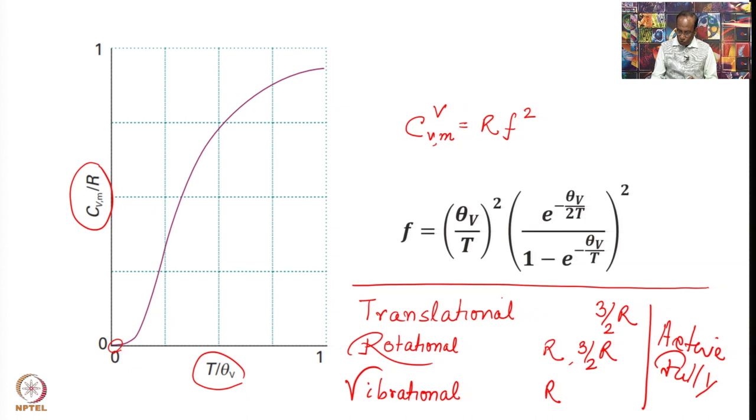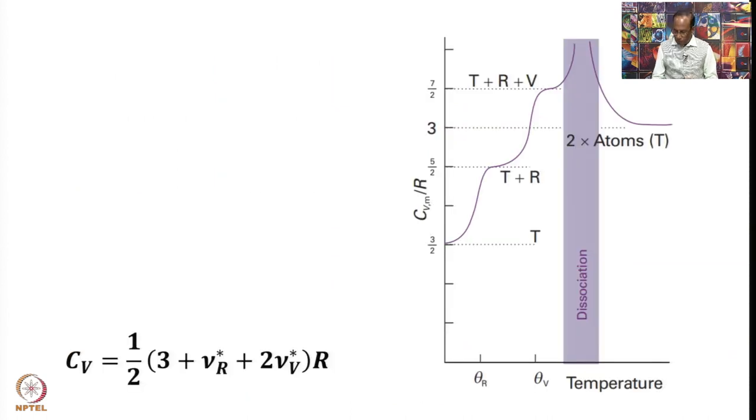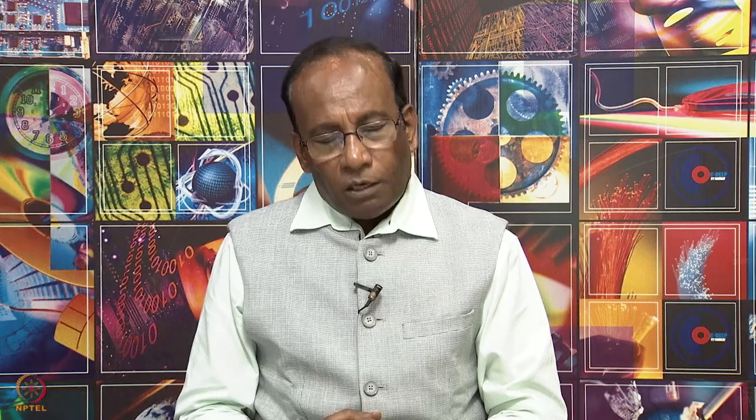There is one more contribution to mention: the electronic contribution to constant volume heat capacity. Since vibrational energy levels are already far apart — making vibrational contributions very small under normal conditions — the electronic energy levels, which are even further apart, make the electronic contribution negligible. Therefore in our normal discussion, we include translational, rotational, and vibrational contributions only.